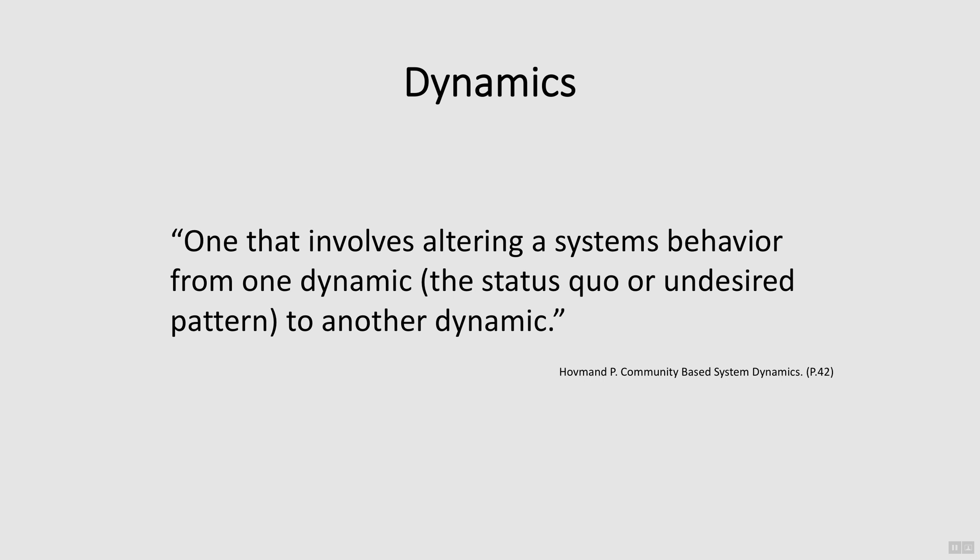Hoffman, in his book on doing community-based system dynamics, defines a dynamic problem as one that evolves altering a system's behaviour from one dynamic, meaning the status quo or an undesired pattern, to another dynamic. We will give examples of what it means to alter the behaviour from one dynamic to another in the latter slides.